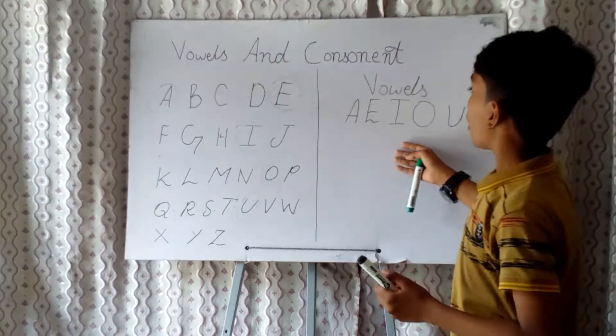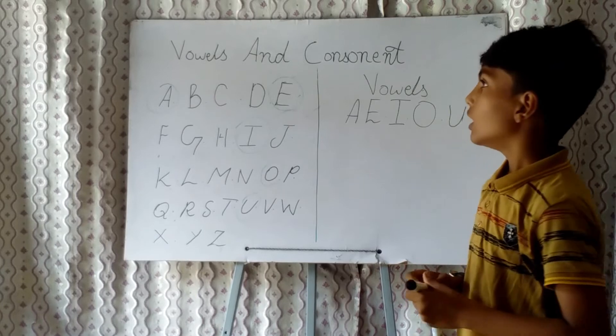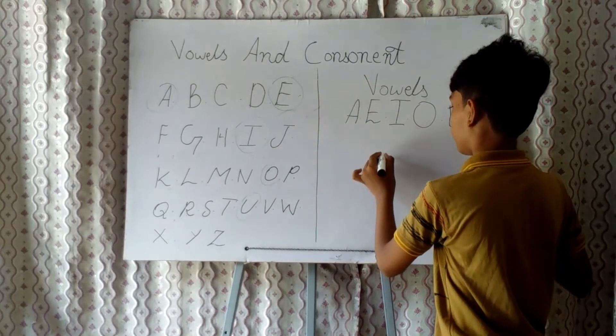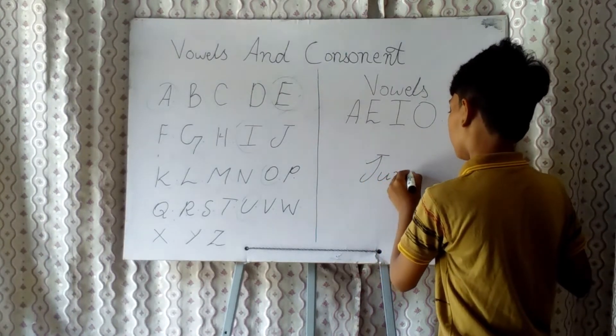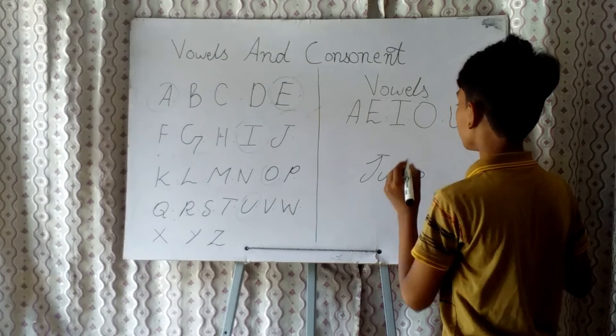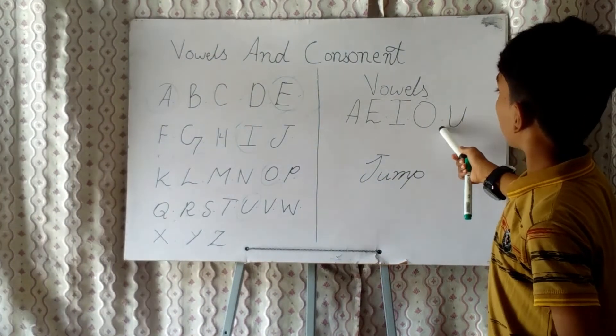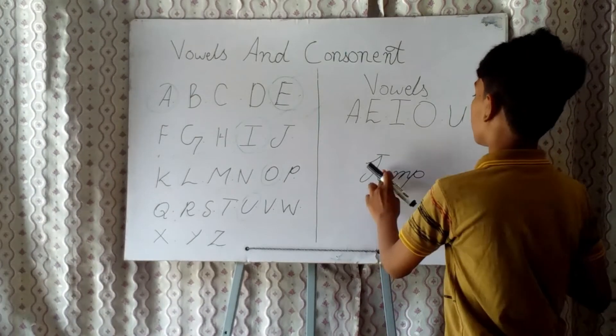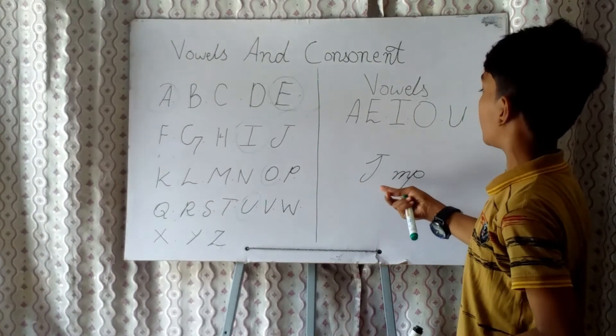Anyone can't make words without vowels. Like 'jump'—there's a vowel U and there's also a vowel U. So it is a vowel. If I will erase this U, it is not any word. J-M-P, what is this?